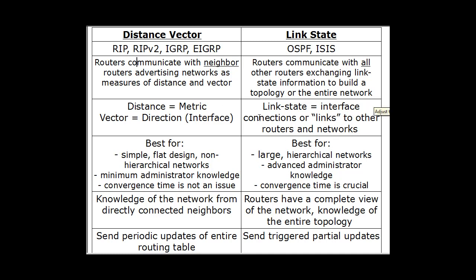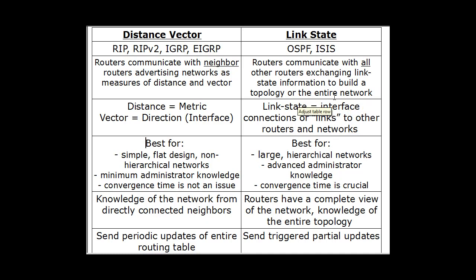Let's talk about some of the differences between Distance Vector and Link State Protocols. In Distance Vector Protocols, routers communicate with neighboring routers, advertising networks as measures of distance and vector. In Link State, routers communicate with all other routers, exchanging Link State information to build a topology of the entire network. So in Link State, routers communicate with all other routers; in Distance Vector, routers communicate only with neighbor routers.